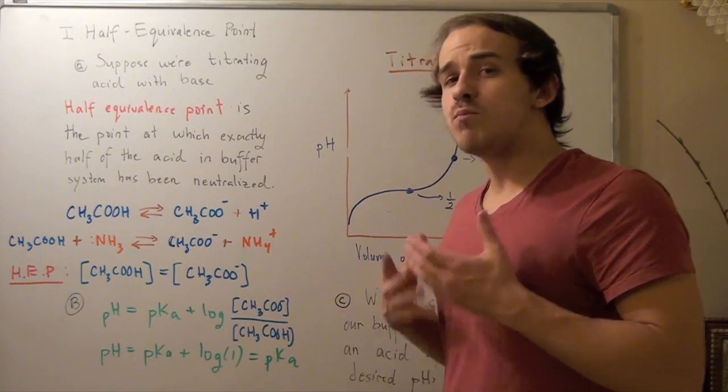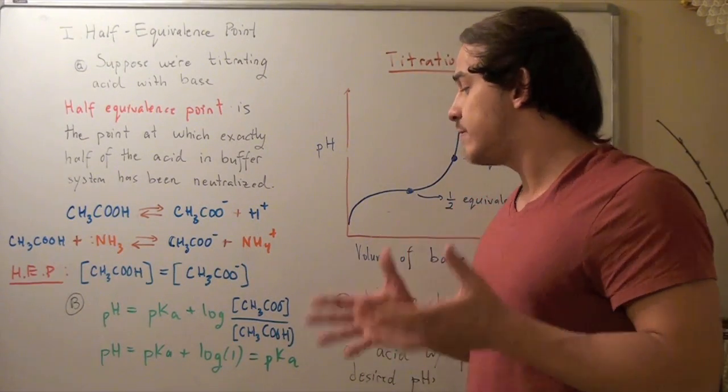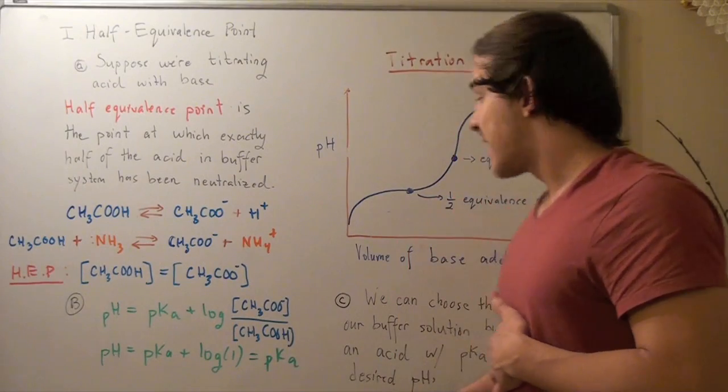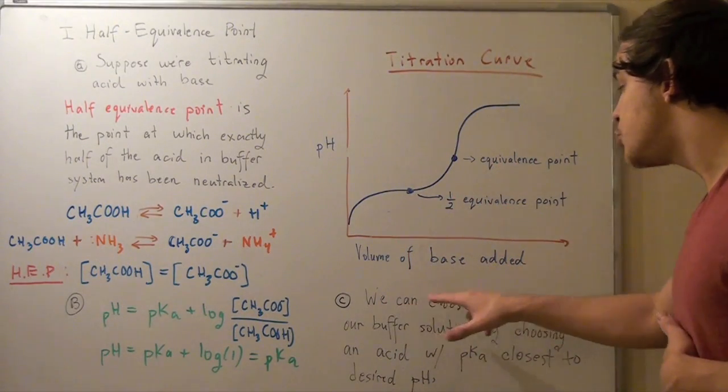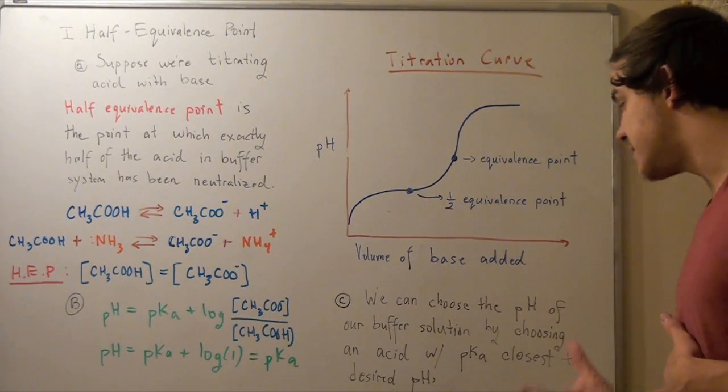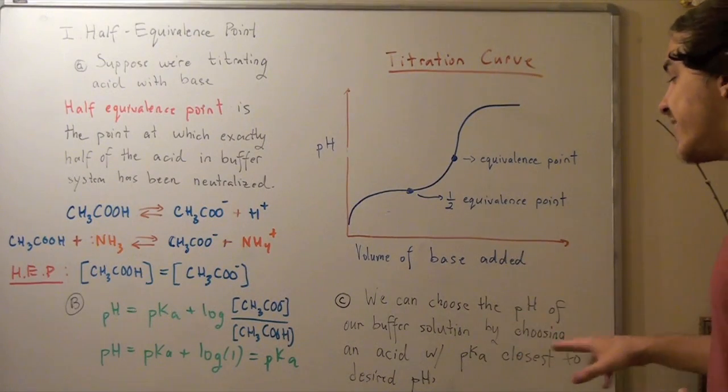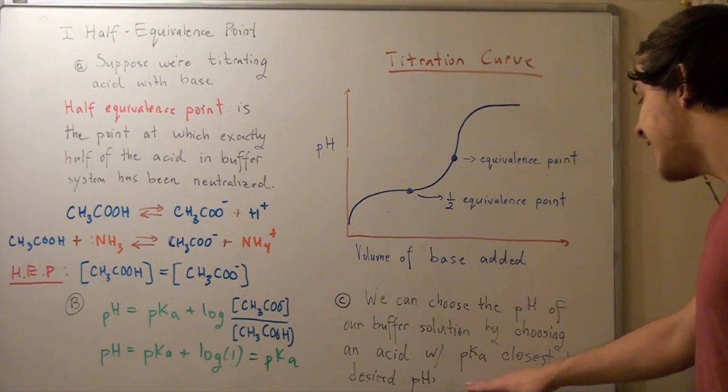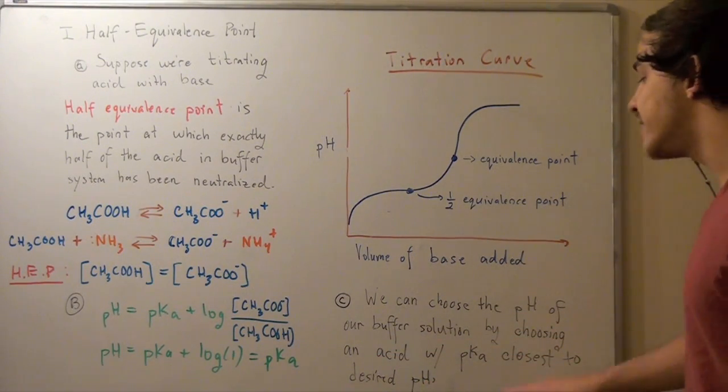Well, that's nice and all, but why is that important? Where is the significance? Well, this means that now we can choose the pH of our buffer system by simply choosing an acid with pKa that's closest to our desired pH.